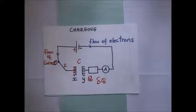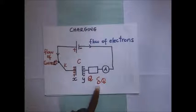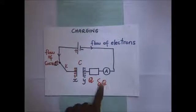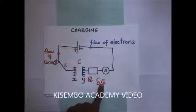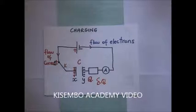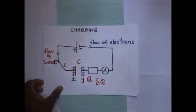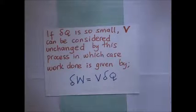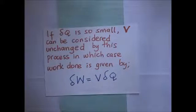If this capacitor was initially partially charged to q and now its charge has been increased by a small charge dq, this small increment involves movement of charge from one plate to another. If this increment dq is so small, we shall assume that the potential difference across the capacitor has not been affected — meaning the potential difference can be considered unchanged or constant.